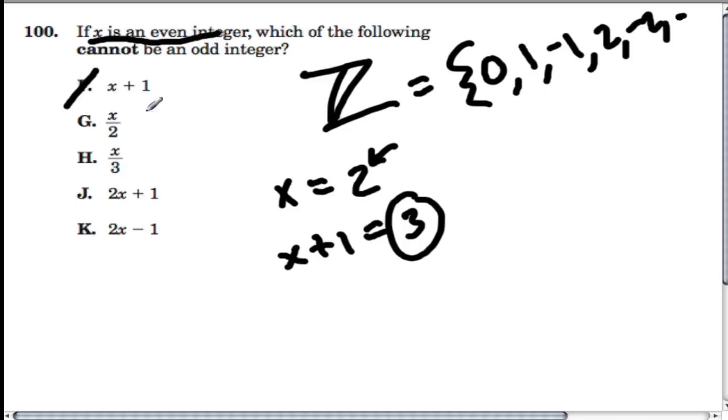X over two, does that work? If X was two, two divided by two is one. So we plugged in even, got an odd. Doesn't work.